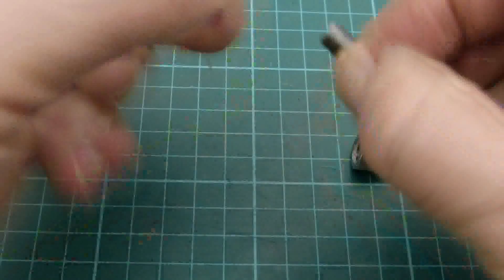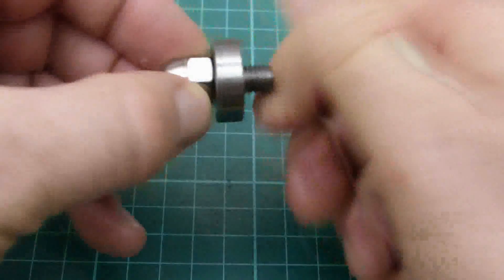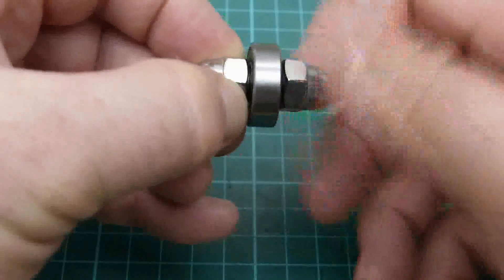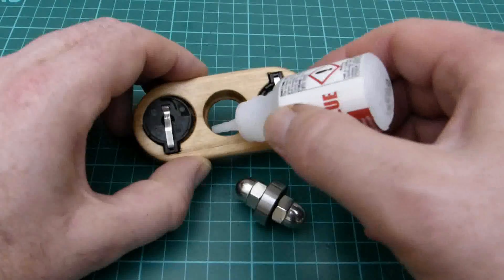The screw thread was then inserted through the bearing and the two dome nuts screwed onto either end. And finally the bearing was glued into the wooden holder.